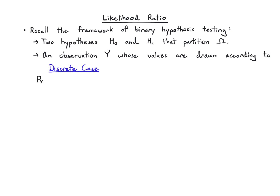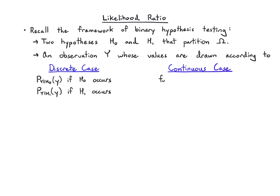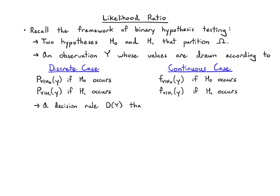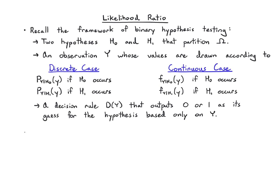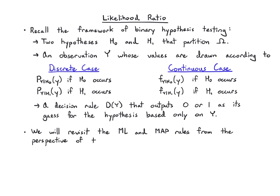We had a conditional PMF given H0 for Y under H0 and one for H1. In the continuous case, we have f of Y given H0 and f of Y given H1. We also needed a decision rule d(Y) that outputs 0 or 1 based only on the observation Y. What we're going to do now is revisit the ML and MAP rules through the perspective of the likelihood ratio.